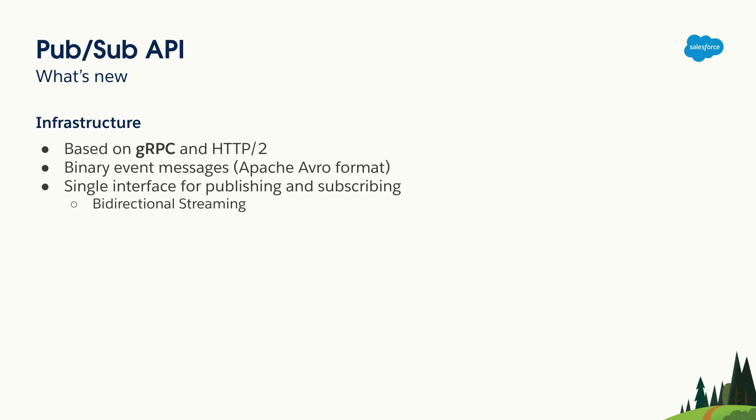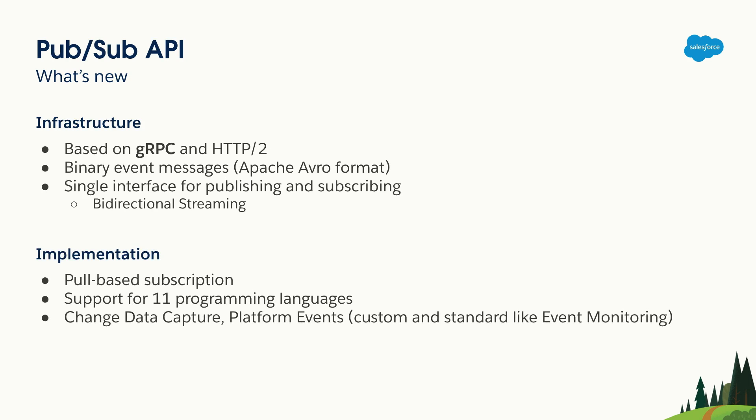PubSub API uses a single interface to publish and subscribe to events. Talking about implementation, it is a poll-based subscription, which means you will have control over the events and when to receive them — controlling the amount of events you receive and when to get them from the event bus. It supports 11 programming languages, including Python, Node, Java, and JavaScript — essentially every language that supports gRPC.